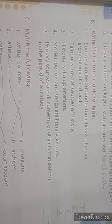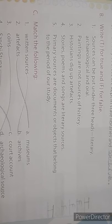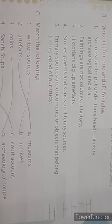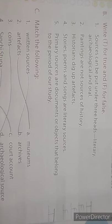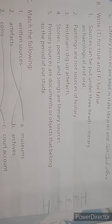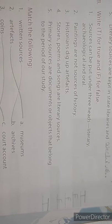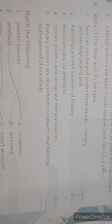Now come to question B: True or False. Number 1: Sources can be put under three heads — literary, archaeological and oral. True. Number 2: Paintings are not sources of history. False. Number 3: Historians dig up artifacts. True. Number 4: Stories, poems and songs are literary sources. False. Number 6: Primary sources are documents or objects that belong to the period of our study. True.